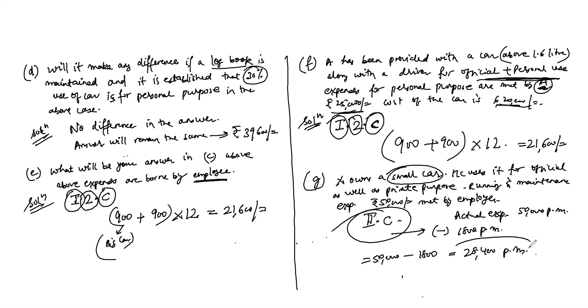So the value of perquisite = ₹50,000 minus ₹1,800 = ₹28,400 per month. Multiply by 12 to get the full year value.